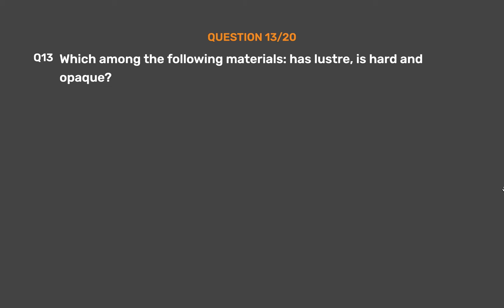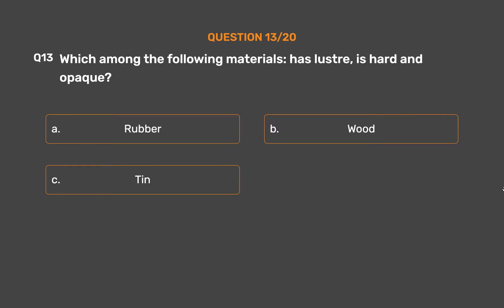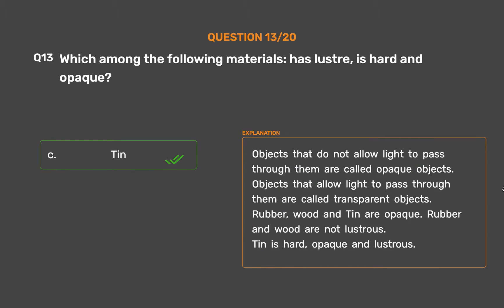Question number 13. Which among the following materials has lustre, is hard, and opaque? Option A: Rubber. Option B: Wood. Option C: Tin. Option D: Plastic. The correct answer is Option C, Tin. Objects that do not allow light to pass through them are called opaque. Objects that allow light to pass through them are called transparent. Rubber, wood, and tin are opaque, but rubber and wood are not lustrous. Tin is hard, opaque, and lustrous.